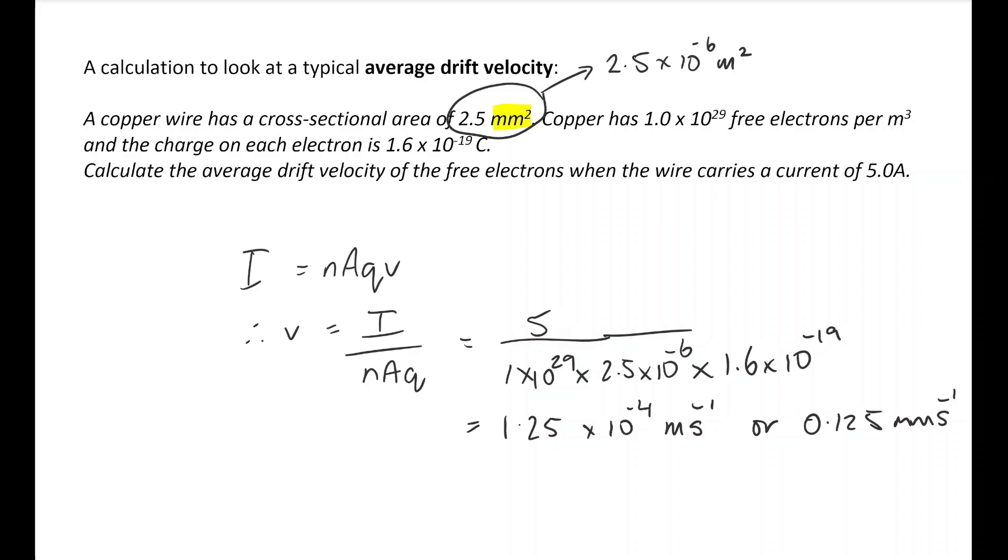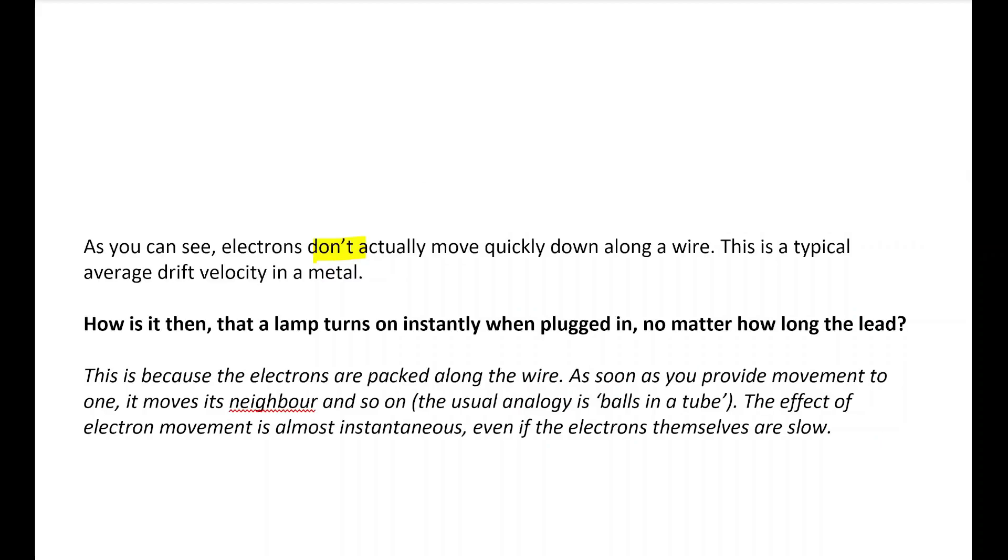The funny thing is that electrons don't actually move that quickly down along a wire. This is a typical average drift velocity. What you have to remember is that there are electrons packed along the wire, though. So as soon as you move one at one end, all of them get moved along. So it's often compared to balls in a tube. You pop a ball in one end of the tube, instantly a ball falls out the other end because all of the balls are touching each other in the middle of the tube. So the effect is instantaneous, even if the electrons' own movement themselves is quite slow.